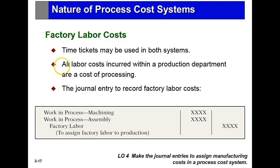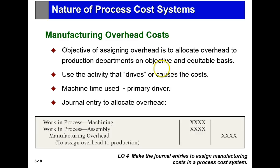Factory labor works the same way. Time tickets are used in both job and process systems, but labor costs get put into a specific department — either machining or assembly. They decide who's working in what area. Same with manufacturing overhead: we determine a predetermined rate by assigning a driver, similar to job cost systems. If there are more machine hours than labor hours, we use machine hours. We find a predetermined rate that goes into either assembly or machining, then credit manufacturing overhead.